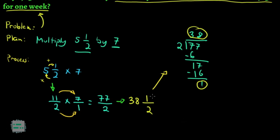Which means that 77 over 2 pag nire-rewrite into mixed fraction will be 38 and 1 half. And that will be our final answer.